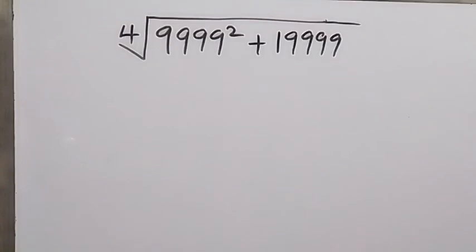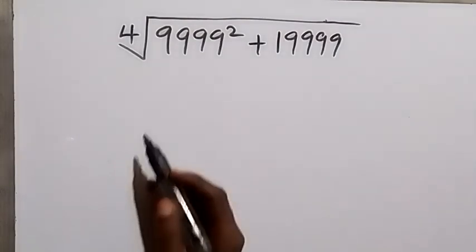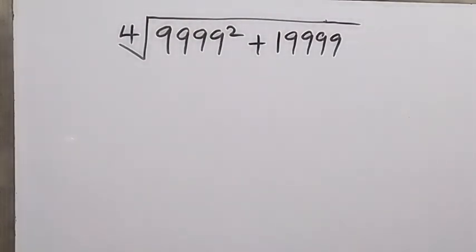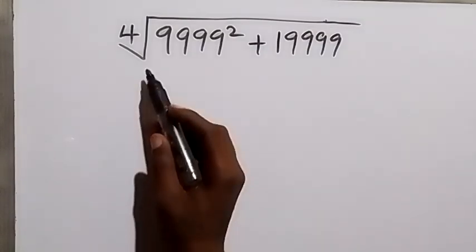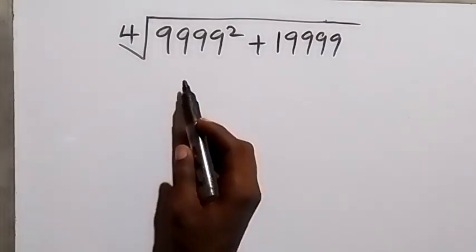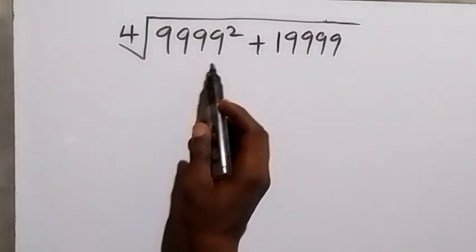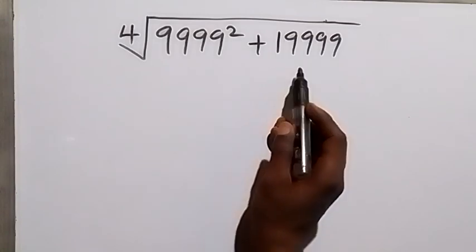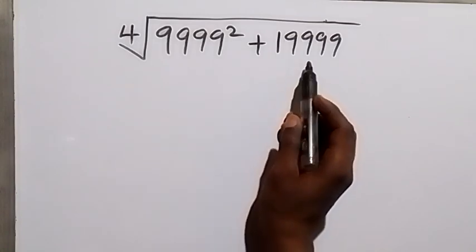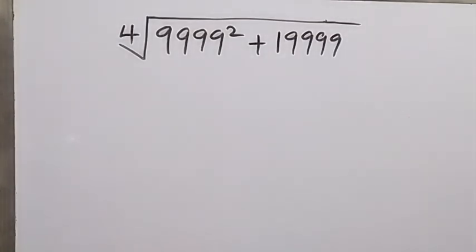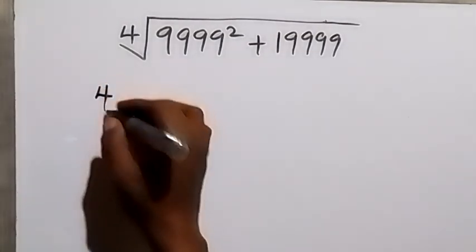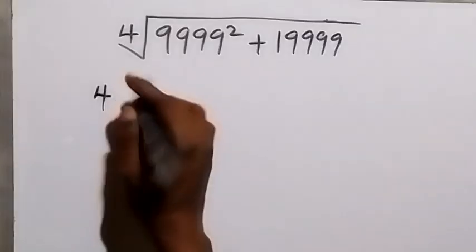Hello, you are welcome. How to simplify this nice Olympiad problem without using a calculator. We have the fourth root of 9999 squared plus 19999. Here we are not using a calculator, and then we can rewrite this.